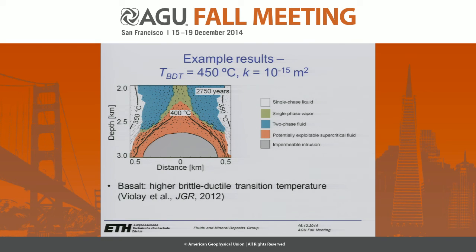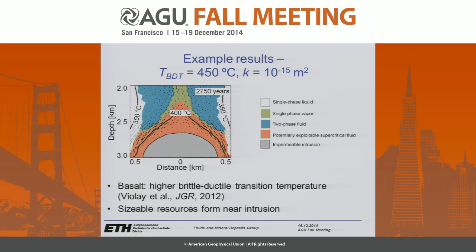However, if you keep host rock permeability constant but increase the brittle-ductile transition temperature to 450 degrees Celsius, you can see that the zone of potentially exploitable supercritical fluid increases dramatically and can extend almost 500 meters above the center of the intrusion. The system is also much hotter as a whole. This kind of behavior would be more like what we expect for a basaltic system that has a higher brittle-ductile transition temperature, and sizable resources can form in the vicinity of the intrusion.